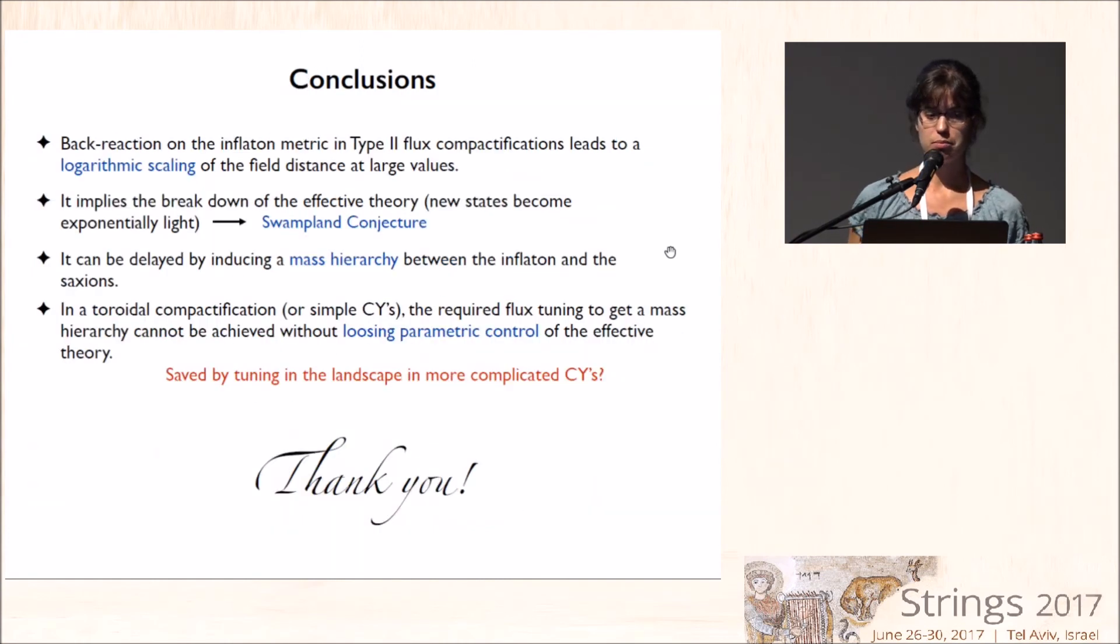So let me summarize. We have seen that back reaction on the inflaton metric in type IIB compactifications leads to this logarithmic scaling of the field distance at large values, which implies a breakdown of the effective theory consistent with the swampland conjecture. And in principle, it can be delayed by inducing a mass hierarchy between the inflaton and the saxions. But in the models that we have been able to check so far, this hierarchy cannot be realized without losing parametric control of the effective theory. So in a more subtle way, it's still consistent with this refined swampland conjecture.